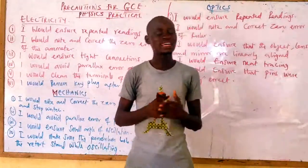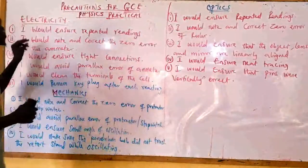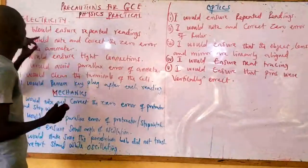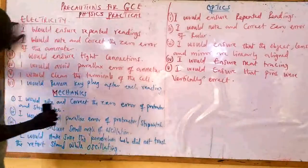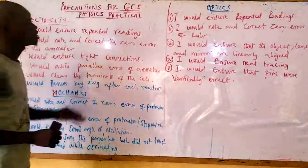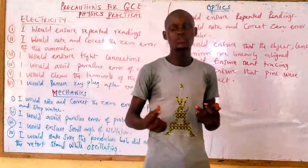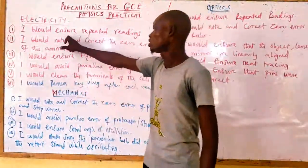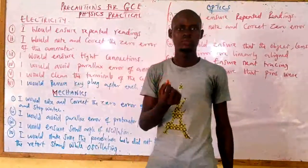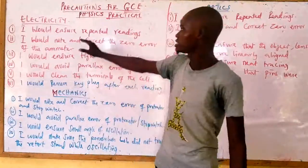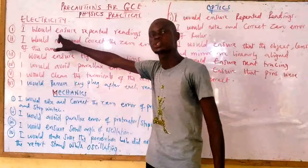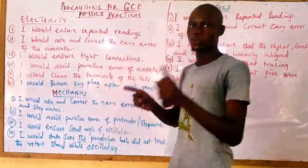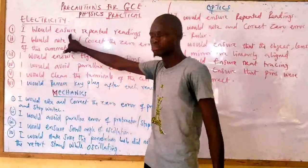In electricity, one of the likely precautions you need to take is that you should ensure repeated readings. Normally, if you are to perform the experiment yourself, you are going to ensure repeated readings. Please note that many students make a mistake with this precaution. If you are going to use the precaution 'I would ensure repeated readings,' please note that if you have to tabulate your readings, you have to give two values of that same reading.